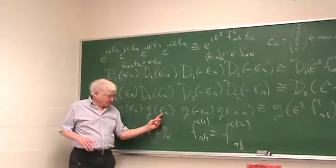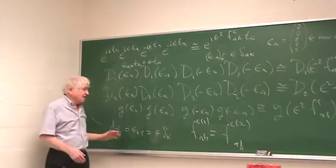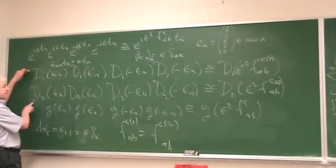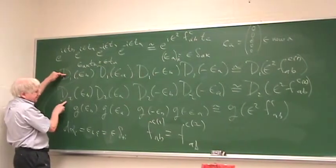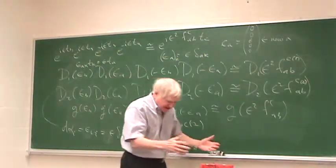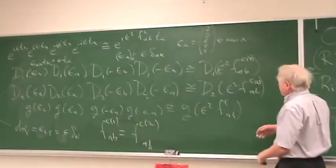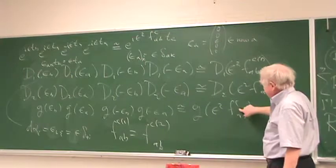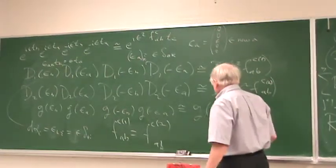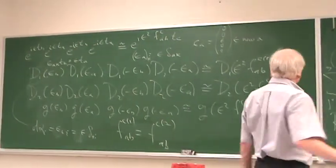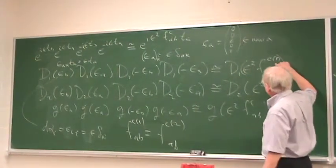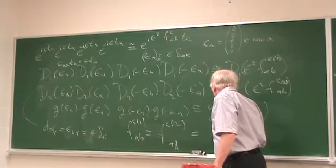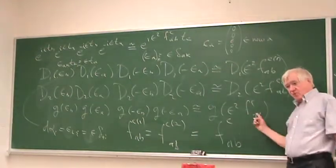The group multiplication law is this, and consequently, the two representations must respect, because representations always respect the multiplication law of the group. You have then that the structure constants for the first representation, the second representation, have to respect this rule. But that means that the structure constants for representation one are equal to the structure constants of representation two, and are equal to the structure constants of the group, which are the ones that occur here.